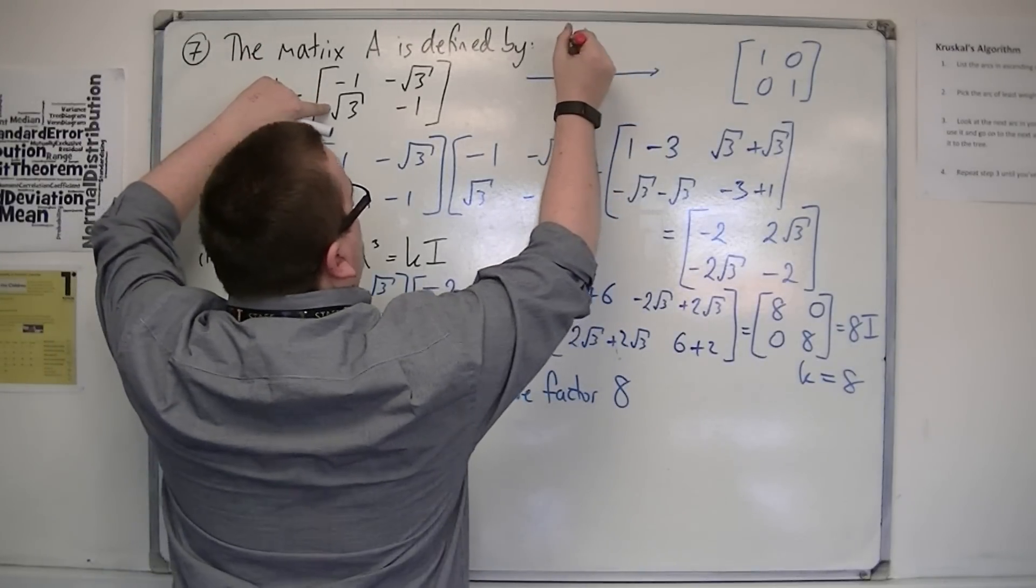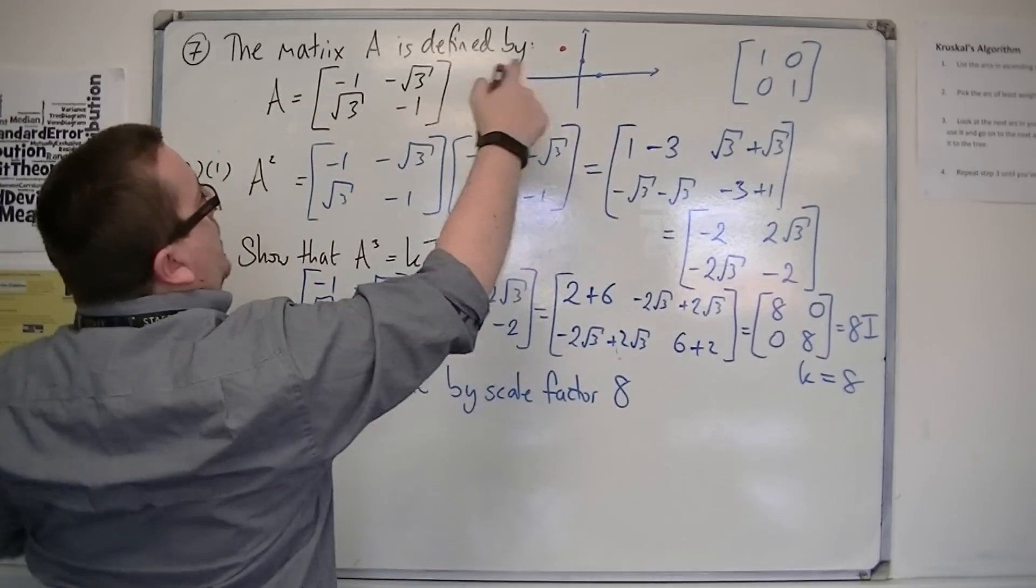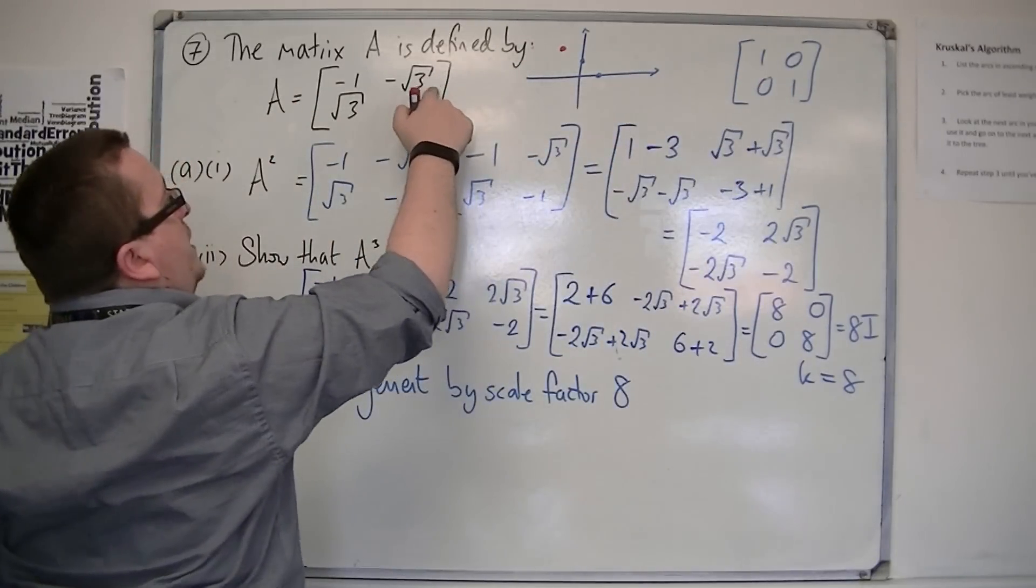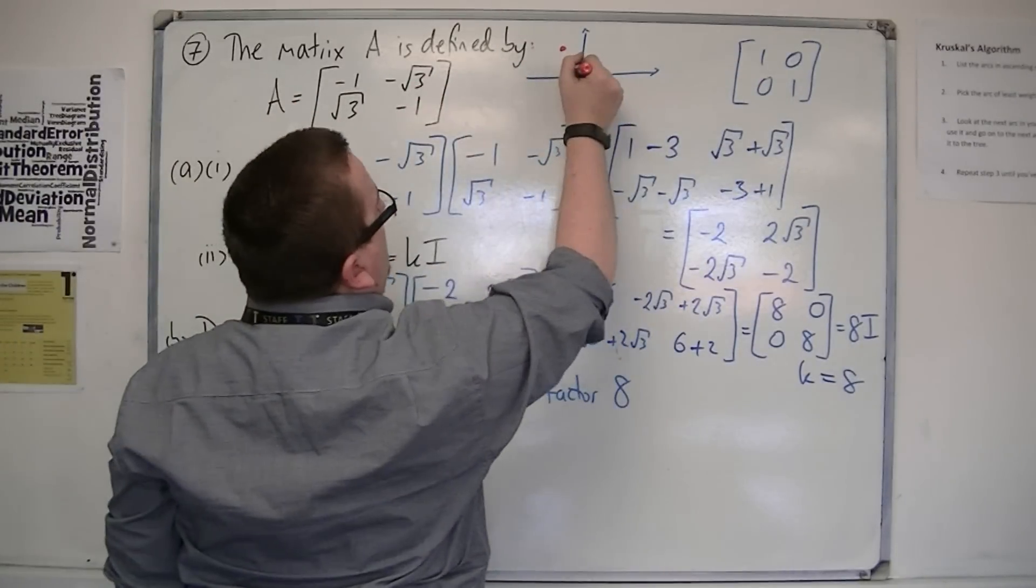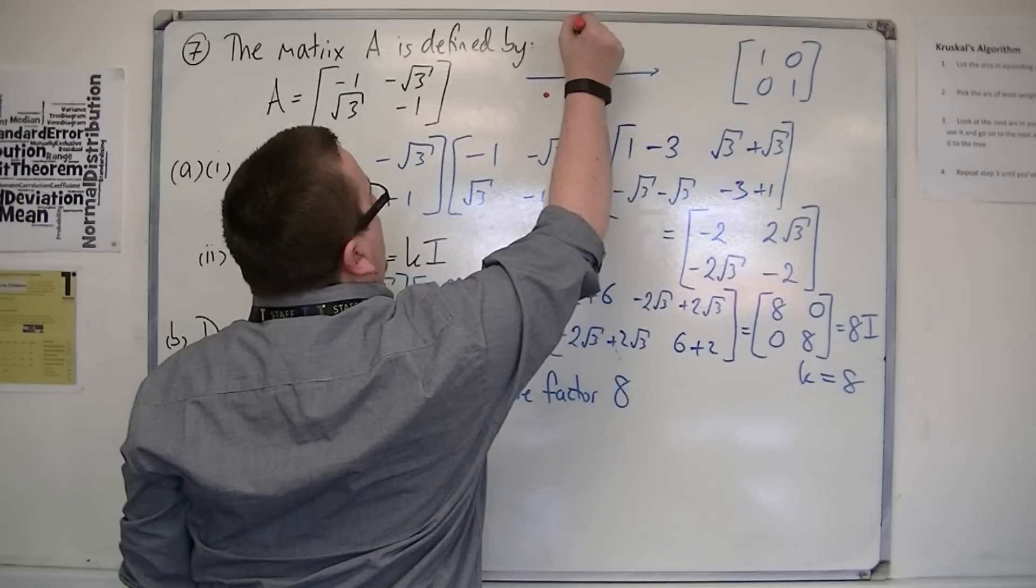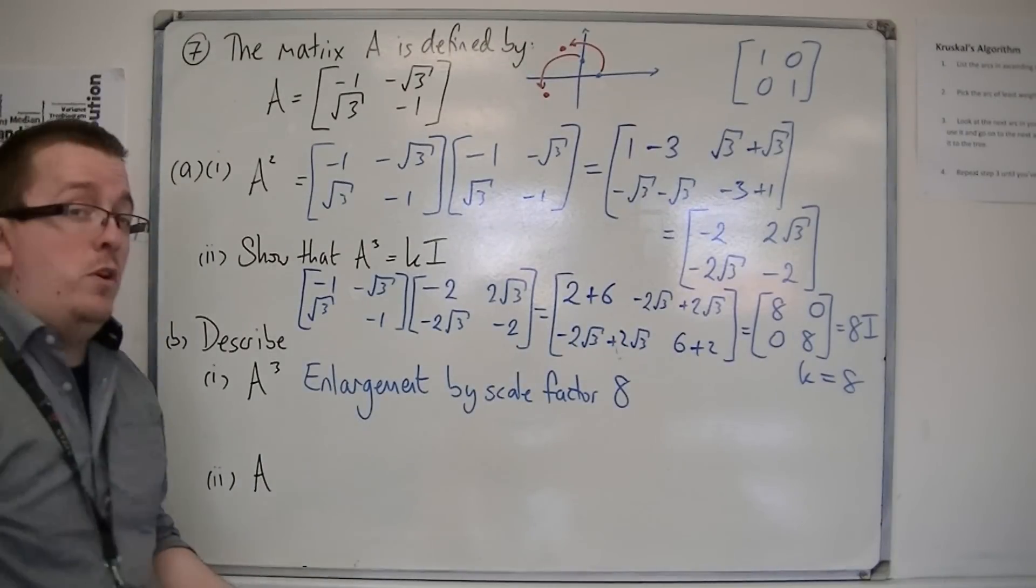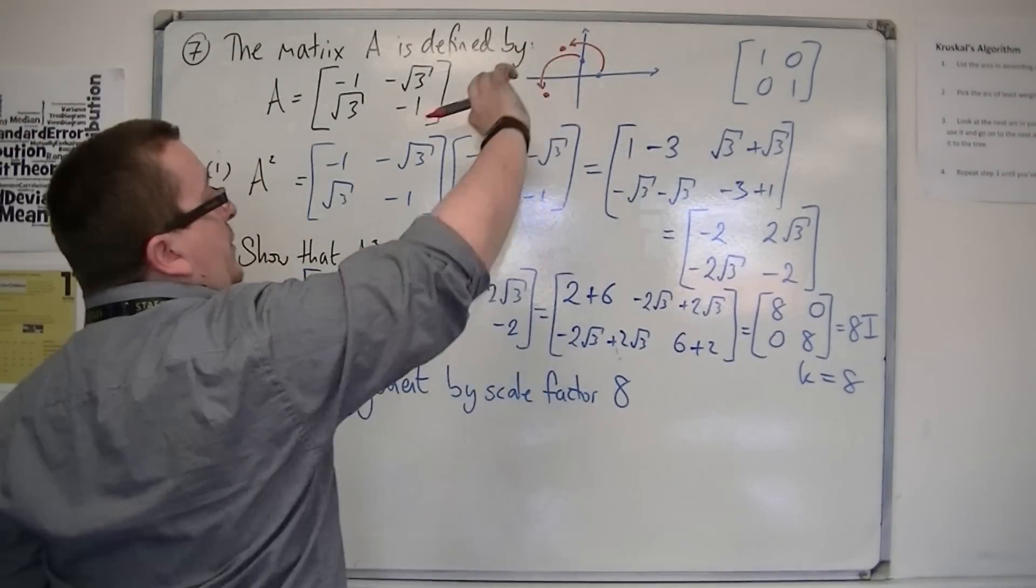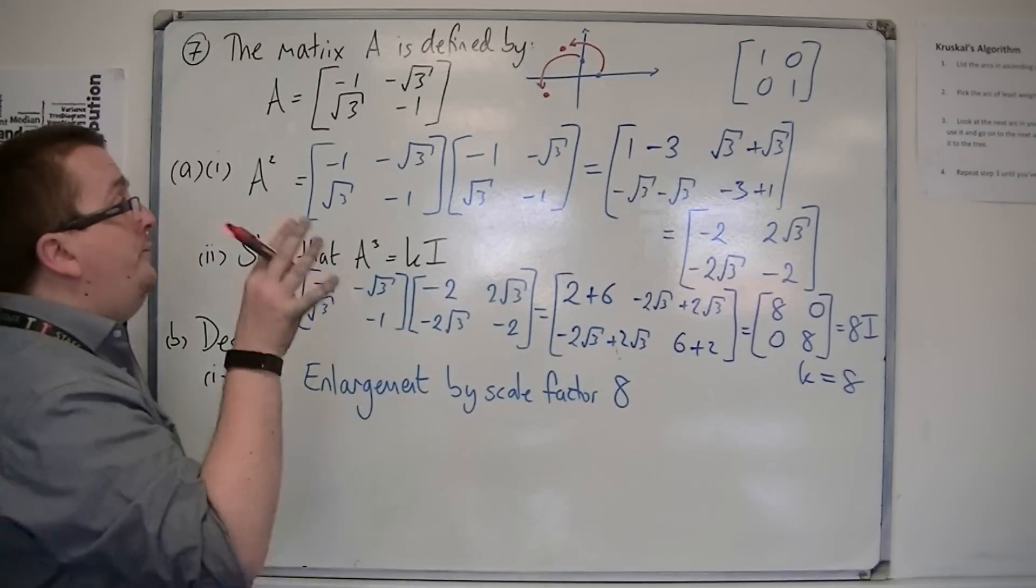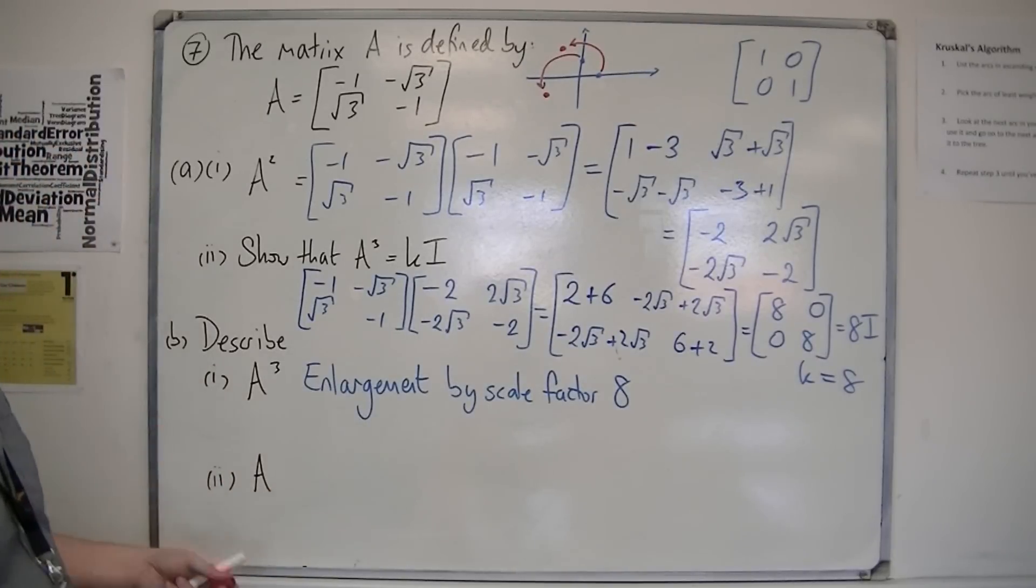And, 0, 1 has moved to minus 1, so minus 1, which is down here. So, this point is moved here. You can see that this should be a rotation, because the two points are moving in the same direction. And, it should also be an enlargement, because these points are clearly further away from the origin than when we started.